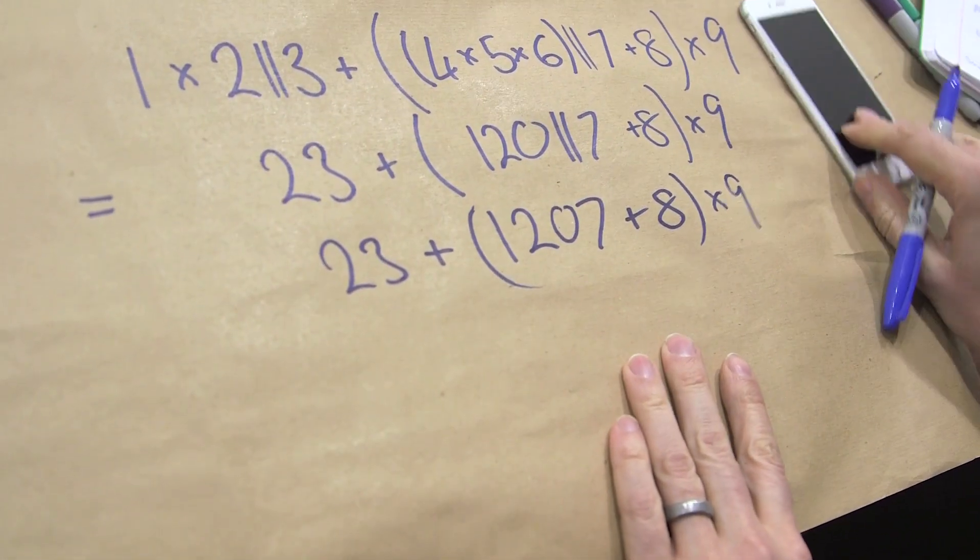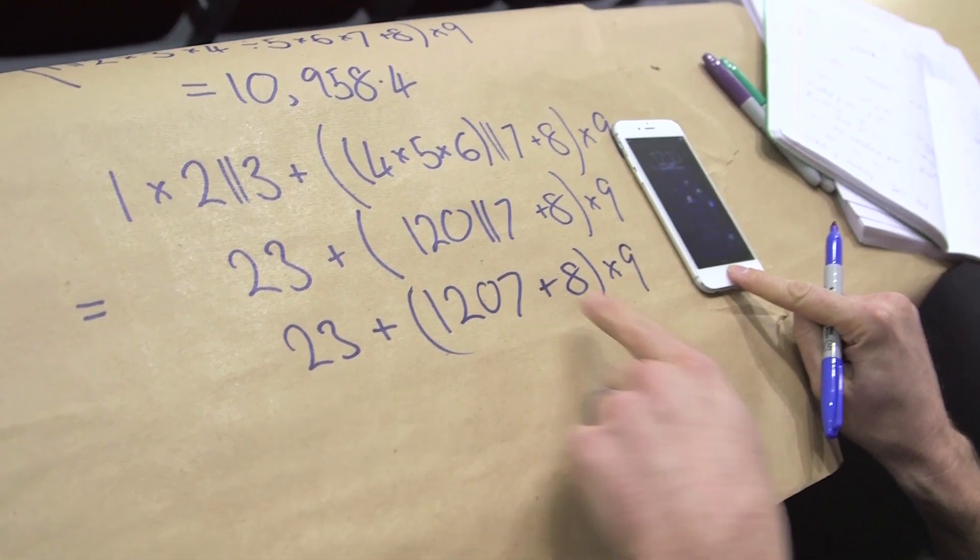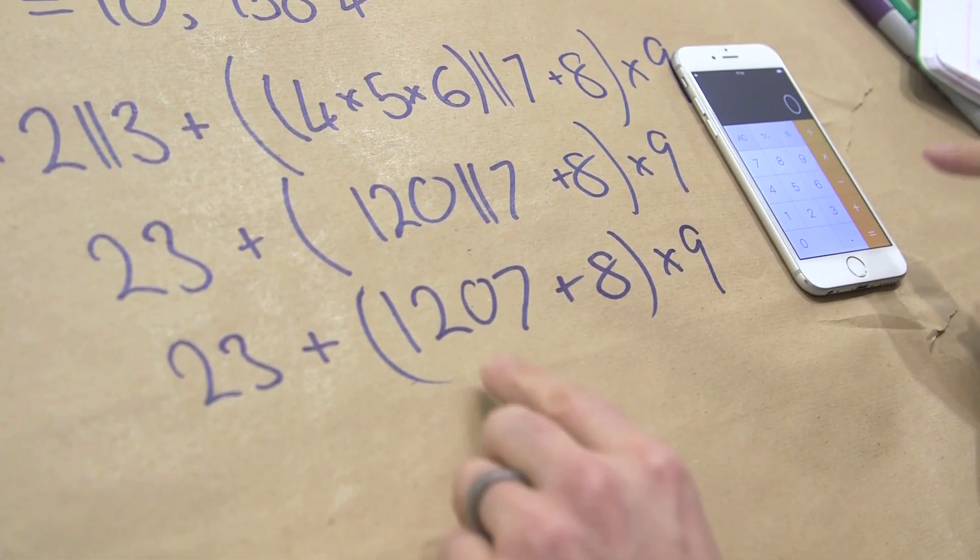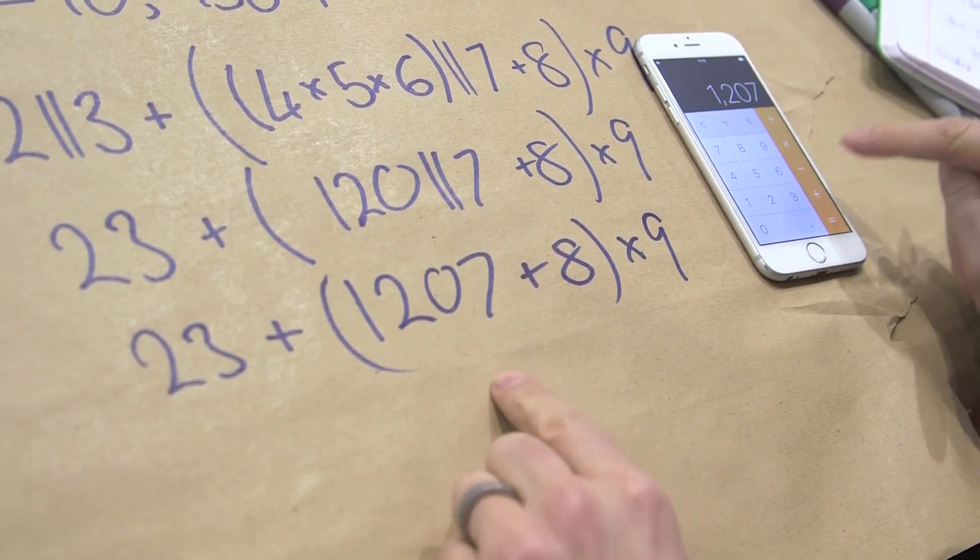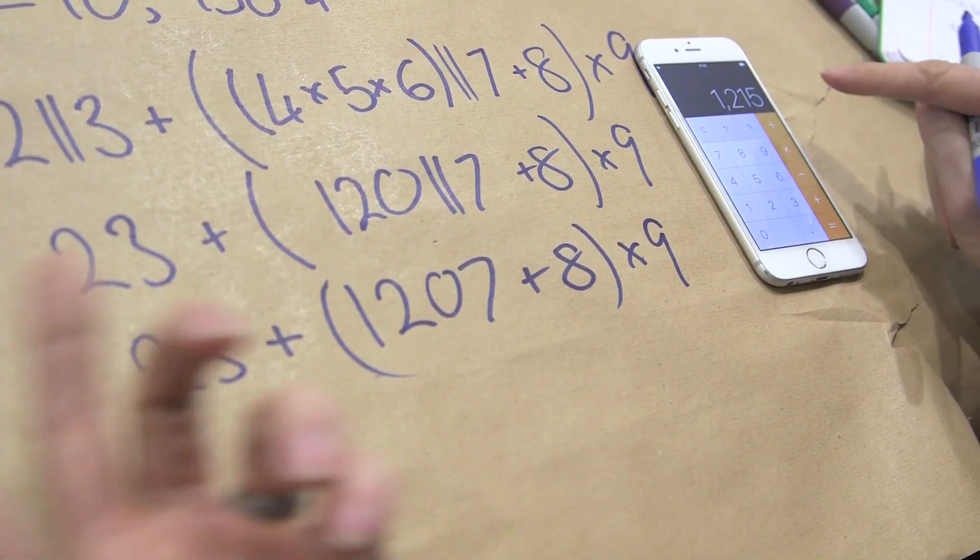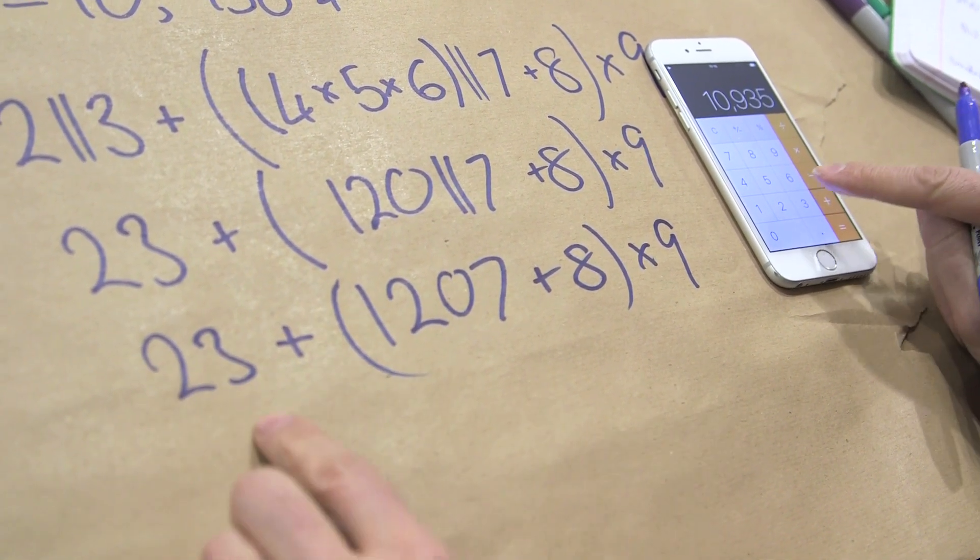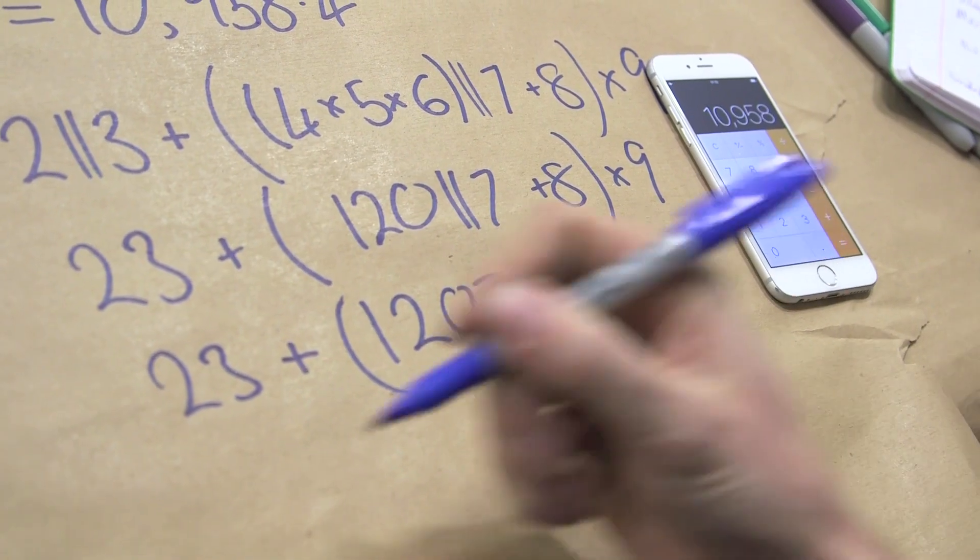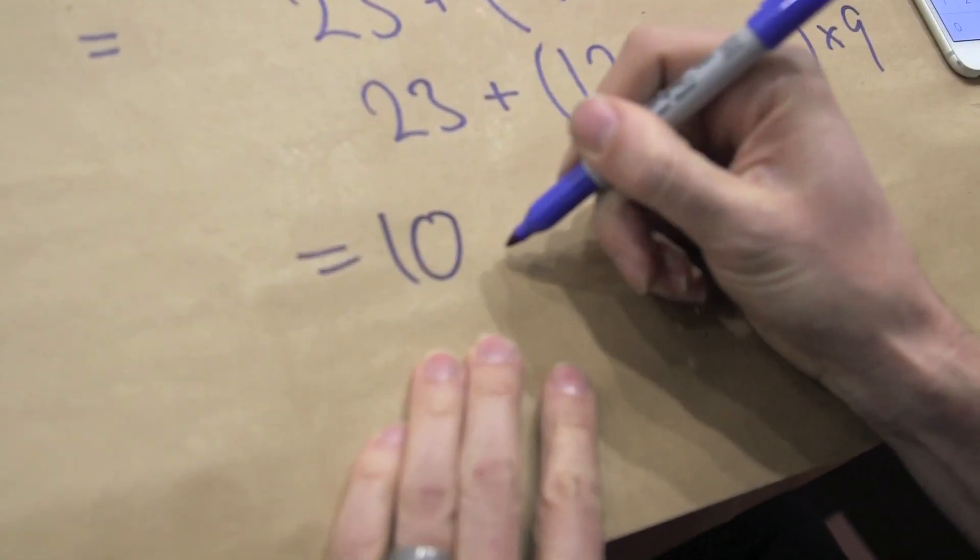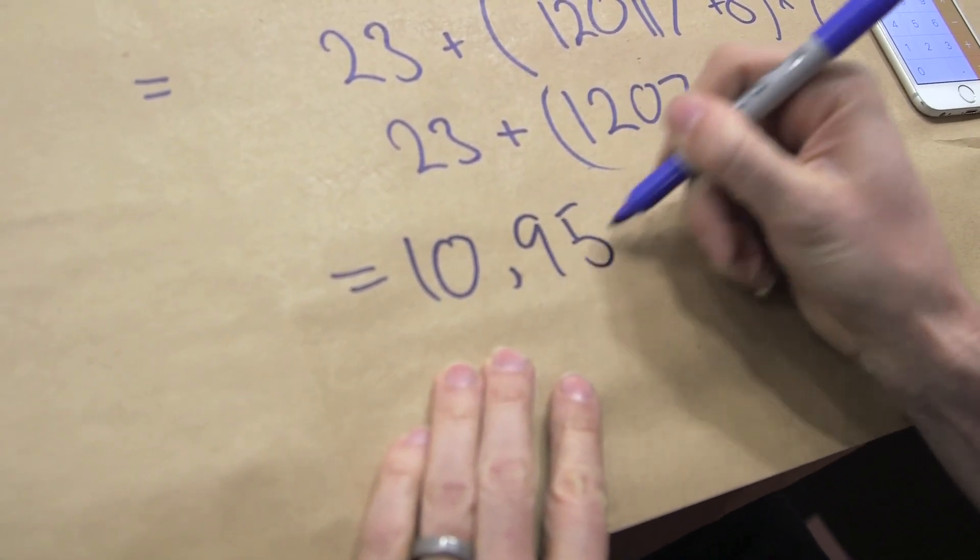OK, so let's chuck that into the calculator now. That feels like it's obvious enough that we can drive this home. 1207 plus 8 equals, unsurprisingly, 1215 times 9 equals that, plus the 23 at the top, equals 10,958. There it is.